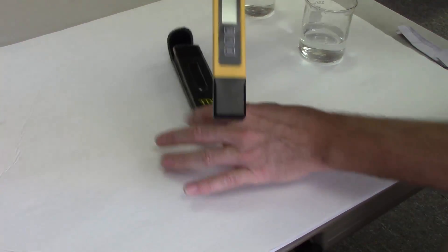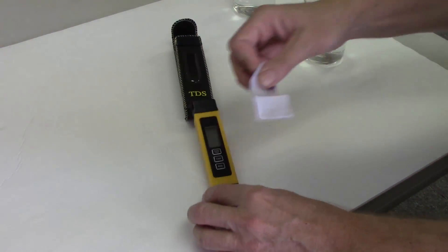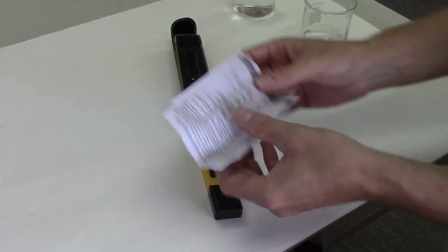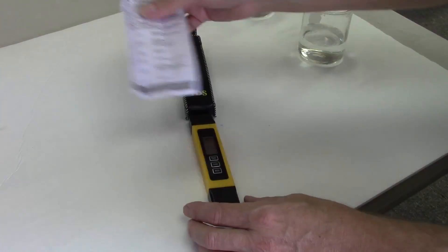When you pull the meter out of its case, inside the case there is a paper insert. The paper insert will explain all the functions of the total dissolved solids meter.